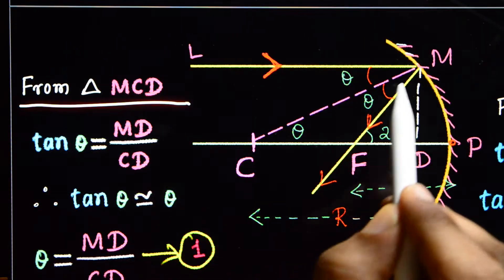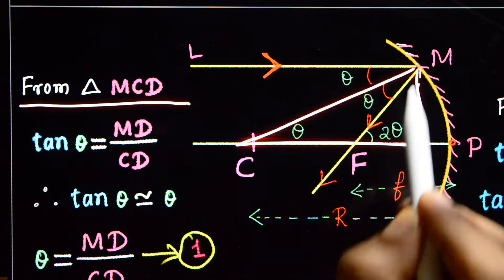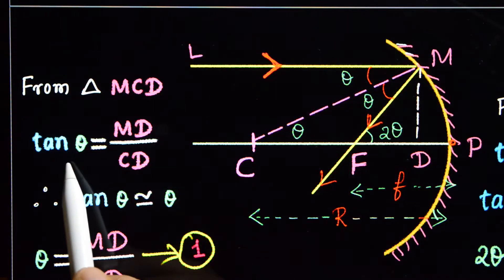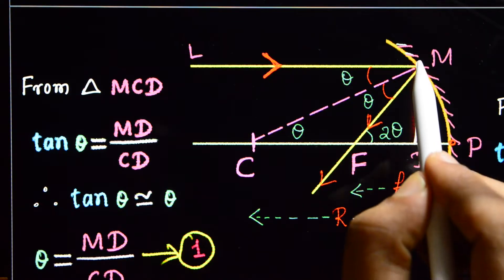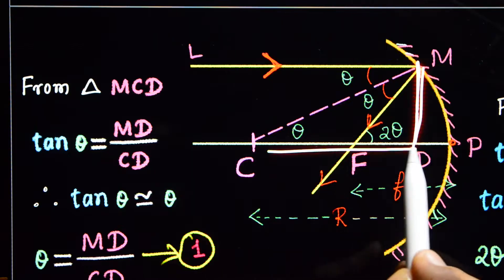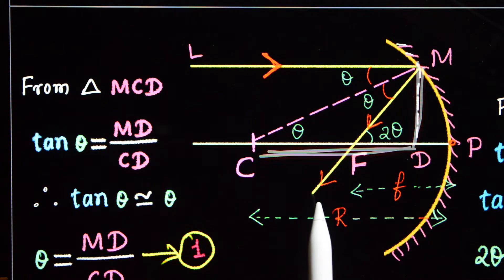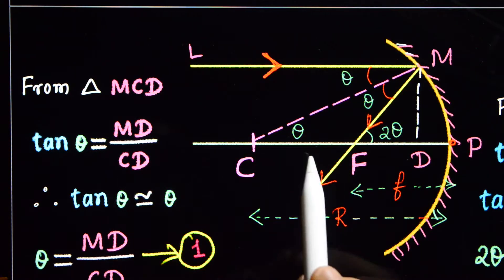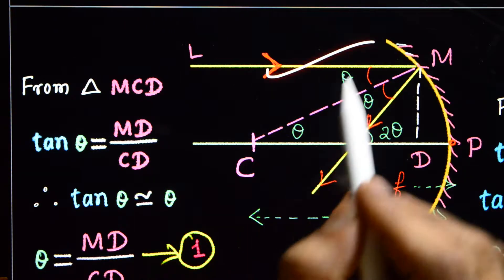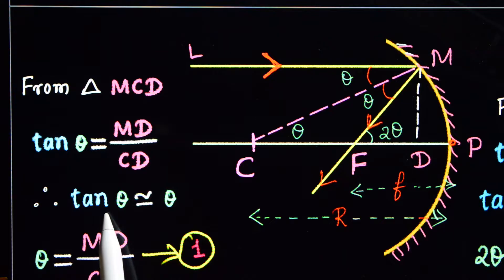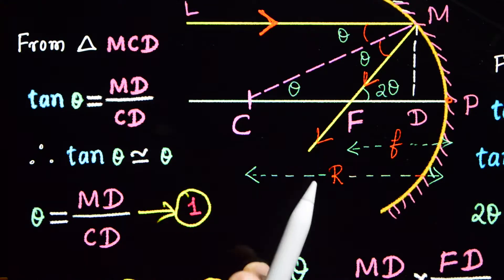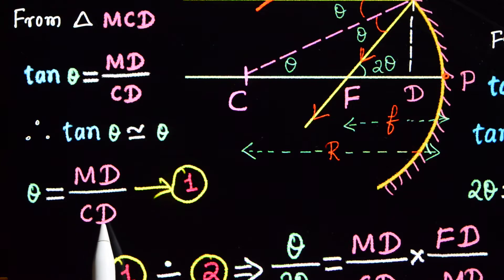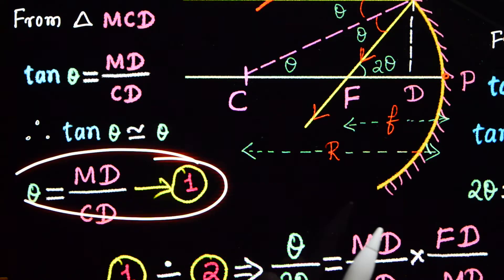From triangle MCD: tan theta is equal to the opposite side MD divided by the base CD. Since theta is small for paraxial rays, tan theta is nearly equal to theta. Therefore, theta is equal to MD divided by CD. That is our first equation.